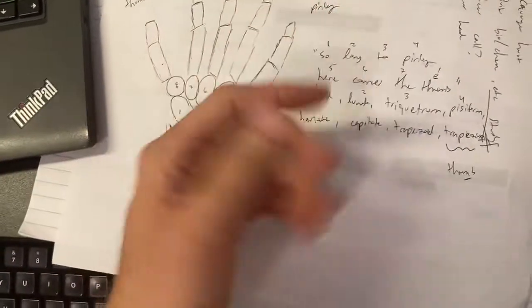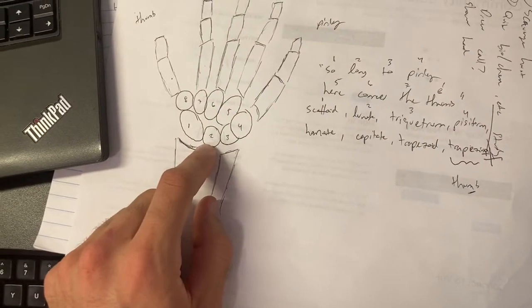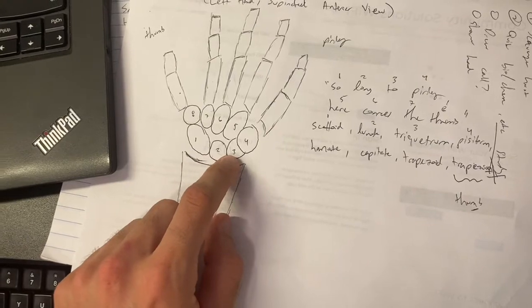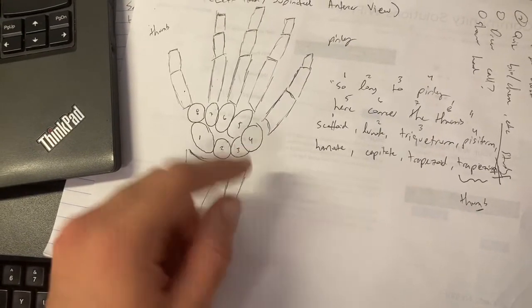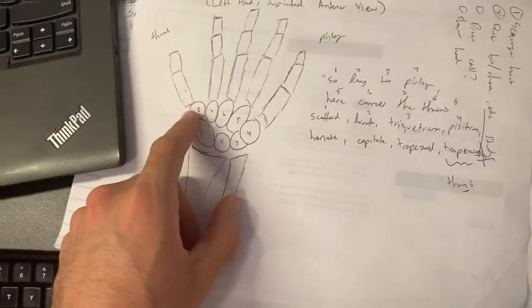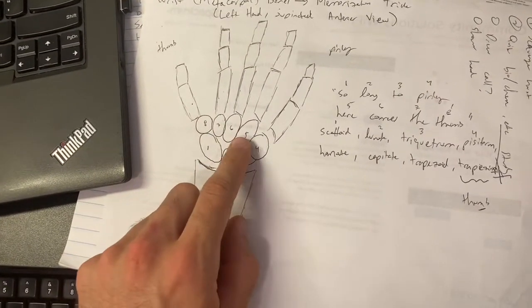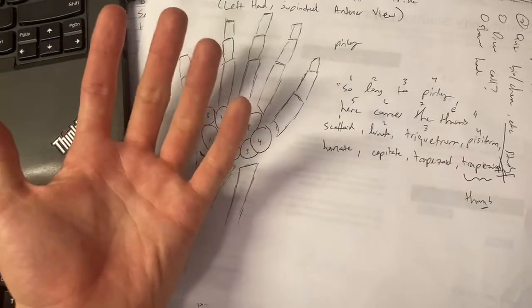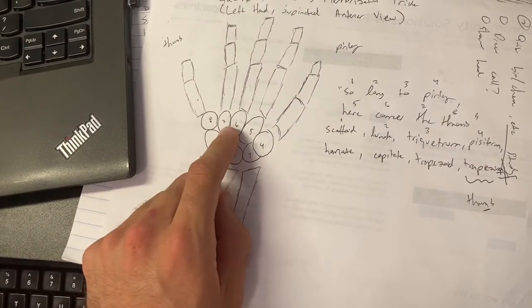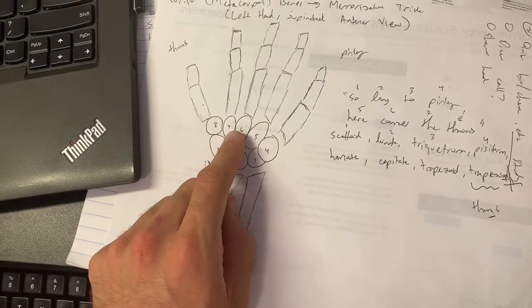We've got the scaphoid as number one, the lunate as number two, the triquetrum as number three, number four is going to be this thing called the pisiform. Then on our way back now towards the thumb from the pinky, we're going to have the hamate here. C comes, and this is going to correspond to capitate.